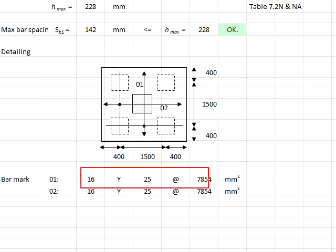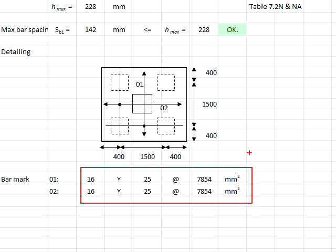This figure shows the reinforcement detailing: 14 and 16 units of Y25 mm bars are provided on the pile cap, with 16 units of Y25 mm bars provided on both sides.